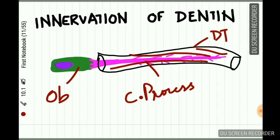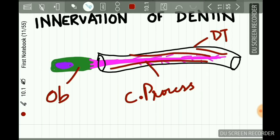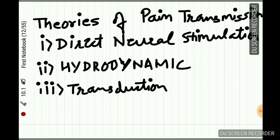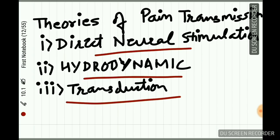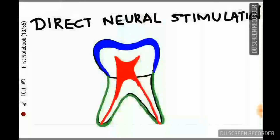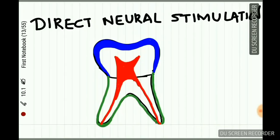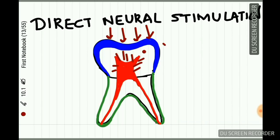These nerves are more concentrated in the pre-dentine and inner part of the dentine. There are three theories of pain transmission: first, direct neural stimulation; second, the hydrodynamic theory; and third, the transduction theory. According to direct neural stimulation, when an external stimulus is applied, nerves in the dentine are directly stimulated. However, since nerves are mostly in the inner dentine and not the outer part, this theory is unacceptable.